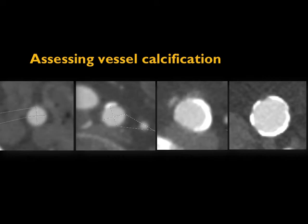When looking at vessels and doing segmental measurements, we assess calcification severity by the degree of circumferentiality: moderate is greater than 50% circumferential calcification up to 75%, and severe is over 75% to essentially complete circumferential calcification.